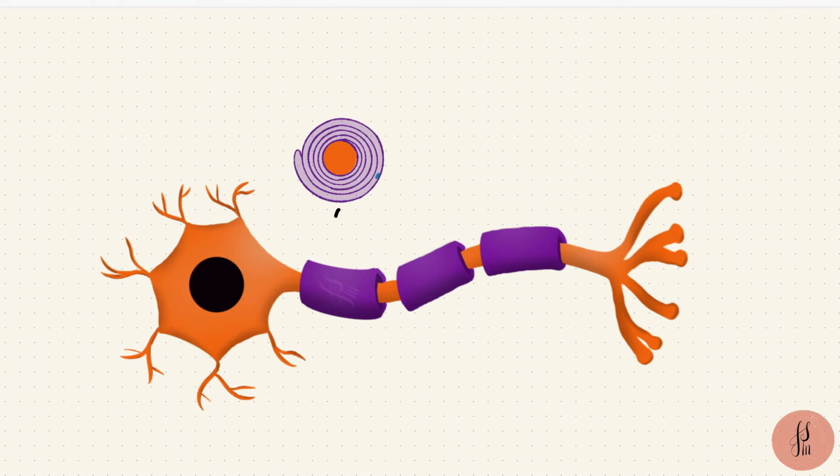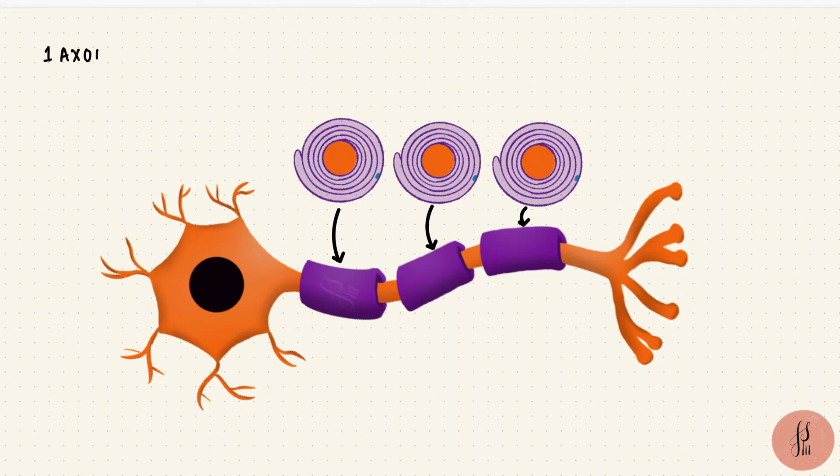So one Schwann cell will myelinate a portion of the axon. And a single axon, therefore, will be myelinated by multiple Schwann cells. But remember, one Schwann cell can myelinate just one axon.